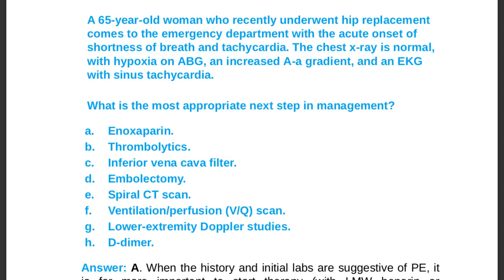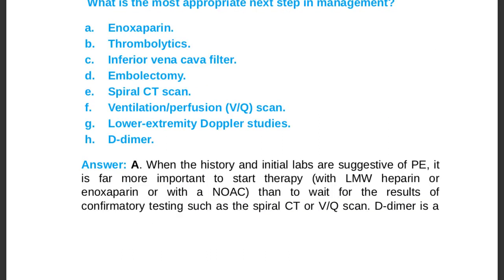The most appropriate next step is to give low molecular weight heparin — enoxaparin — or a NOAC (non-oral vitamin K-dependent anticoagulant). When history and initial labs are suggestive of PE, it is far more important to start therapy than to wait for confirmatory testing such as spiral CT or ventilation-perfusion scan.